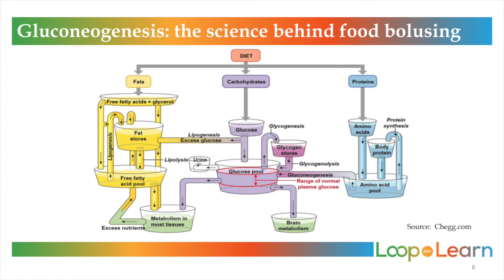This slide is a very detailed diagram explaining gluconeogenesis. It is basically showing how our bodies are amazing and extremely efficient. Not only will our bodies turn carbohydrates into glucose, but our bodies can also turn proteins and fats into glucose.